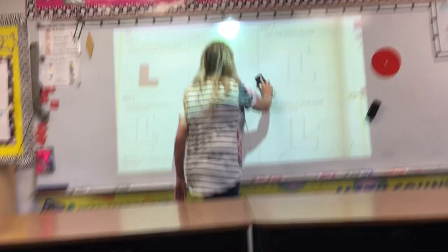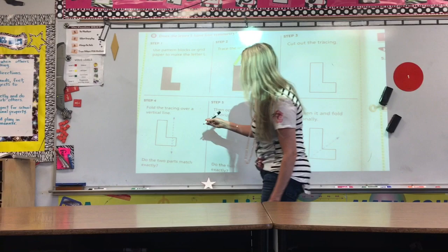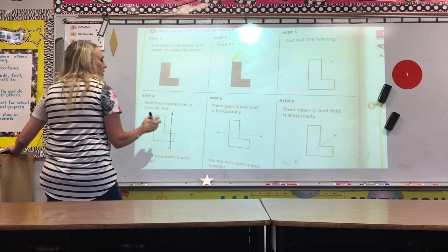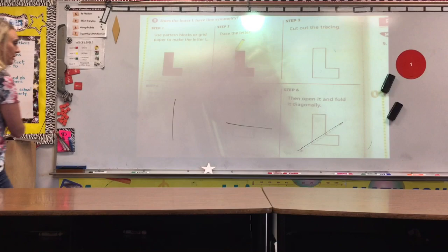Turning to page 474, I want you to look at the L. It says use pattern blocks. Of course, you're not going to have pattern blocks at home. It says trace this letter, cut it out. Well, they've given us squares and done it for us. They're showing you how the L is not going to match. Even if we fold it horizontal, vertical, or diagonal, the L is never going to match up. So it is not a letter that has a line of symmetry.